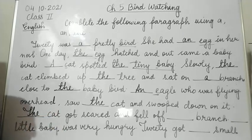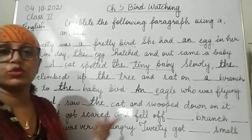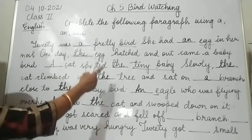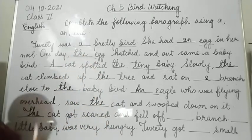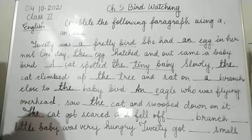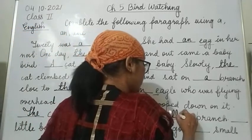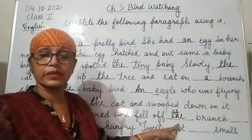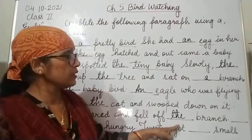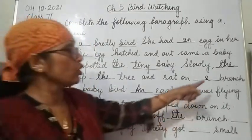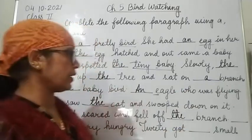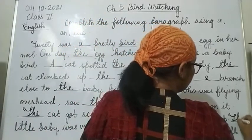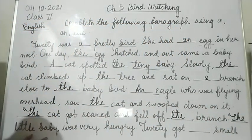If we wrote 'a cat got scared', it would mean just any cat. But here we are talking about that particular cat - the one that climbed the tree and sat on the branch near the baby bird. So, the cat got scared and fell off the branch. The cat fell from the same branch it was sitting on - here it was 'a branch' first, but now since we are referring back to that same branch, it becomes 'the branch'.